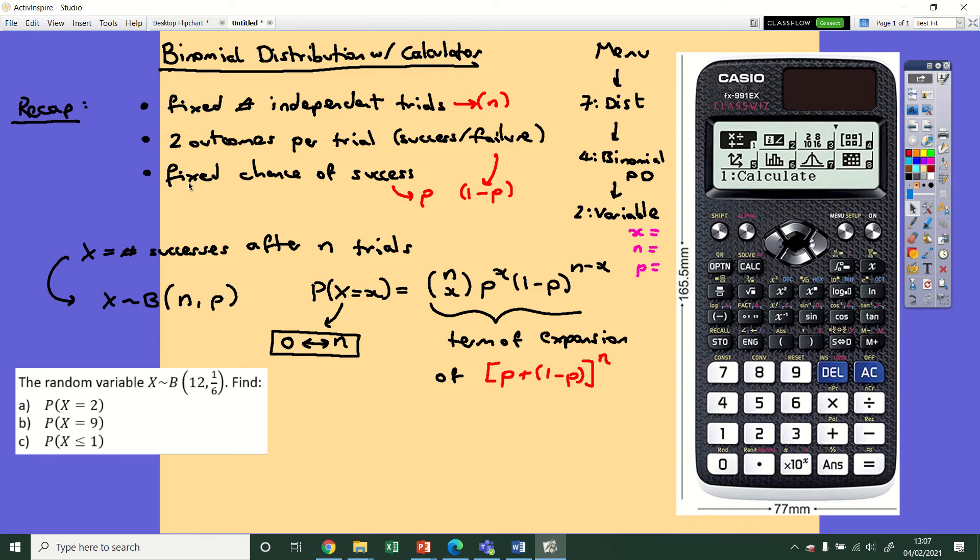On each trial, the chance of success needs to be constant without changing. The chance of success we're calling p, and therefore the chance of failure is 1 minus p. Our variable capital X is counting the number of successes that we're getting after we've had our n trials.